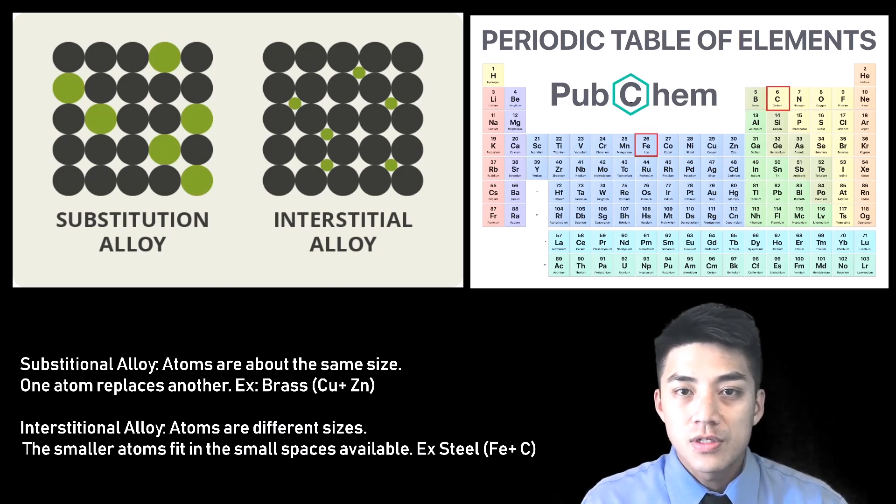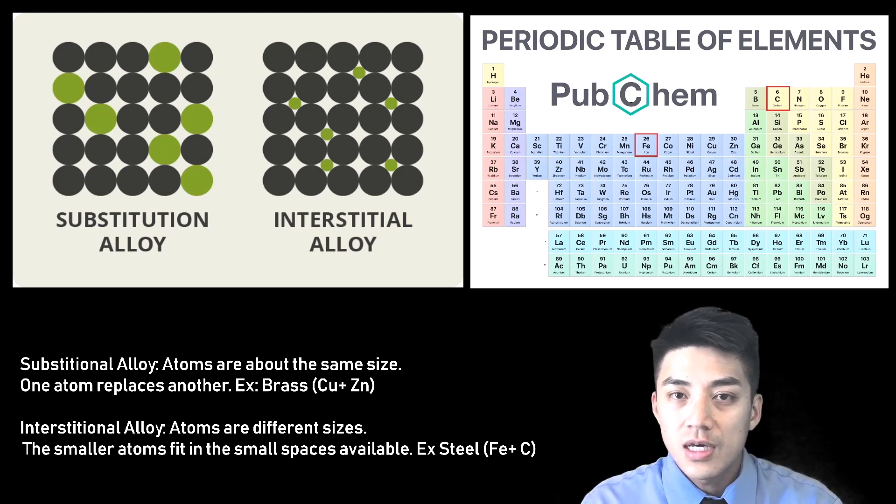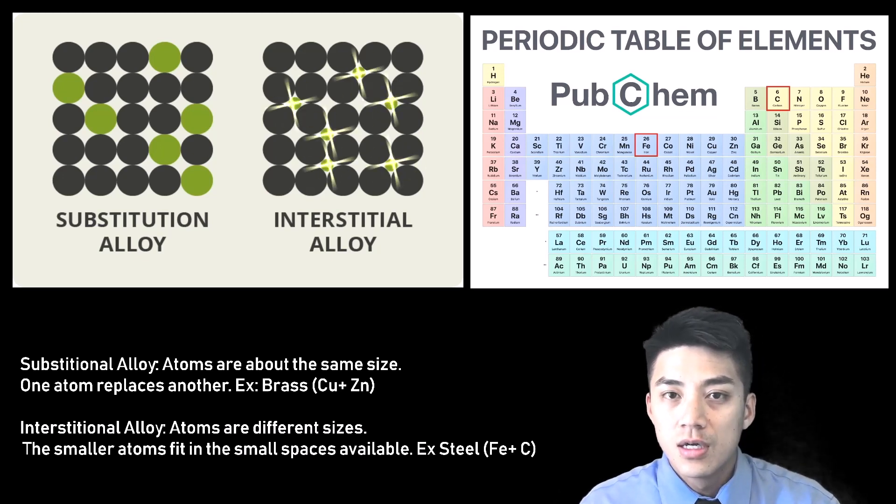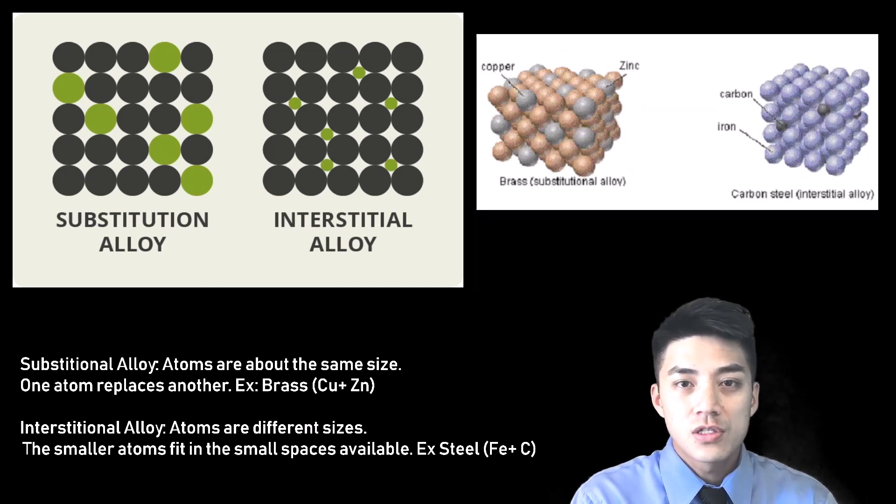On the other hand, you have interstitial alloys, which means the atoms are completely different sizes. One atom is huge, the other atom is really small. The small atoms fit inside the small spaces formed by the big atoms interlocking with each other. An example would be steel. Steel is comprised of iron and carbon, which are completely different sizes, and you can see how they're located in different areas of the periodic table.